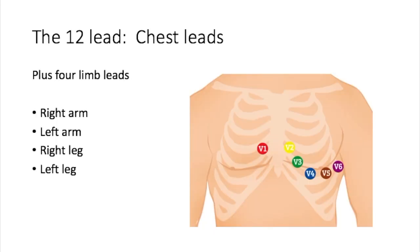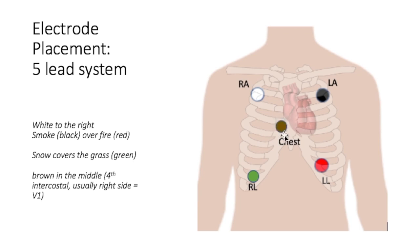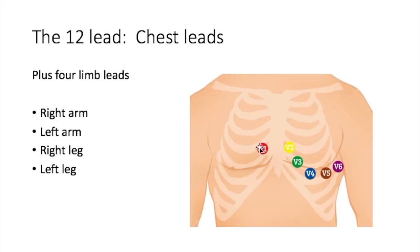In a twelve lead, everything changes on the chest. These are our cardiac leads or chest leads. V1 — the brown lead in the center — sits in the fourth intercostal space on the right side of the sternum and is looking at the right ventricle and the right septum. That's known as V1, positioned at the fourth intercostal space on the right side of the sternum.